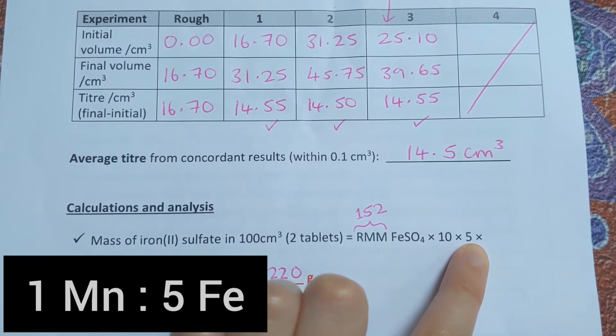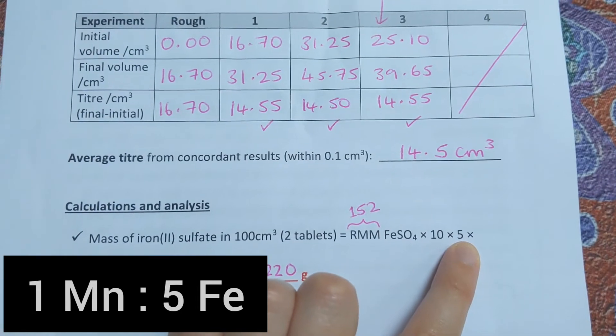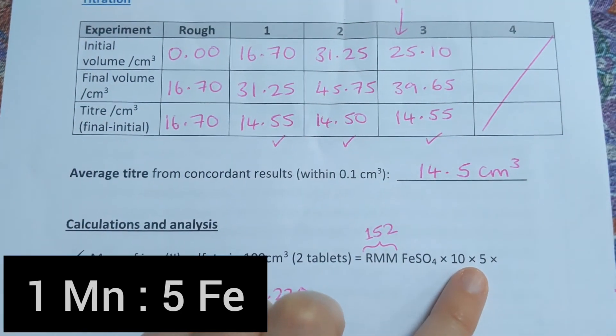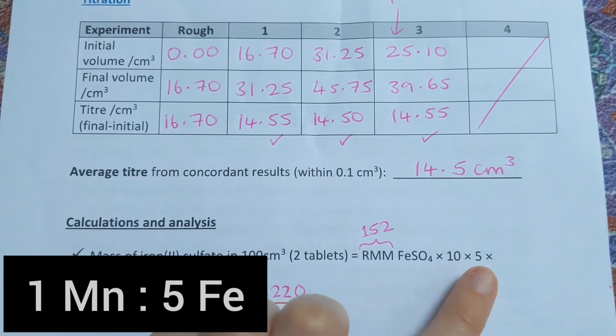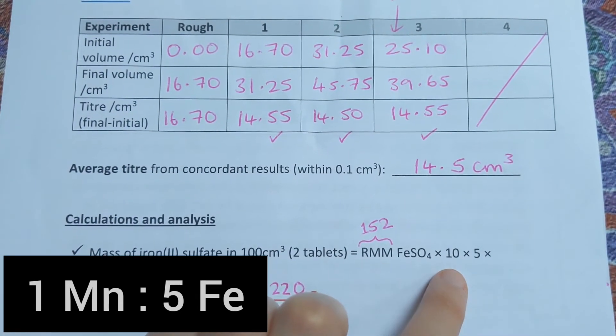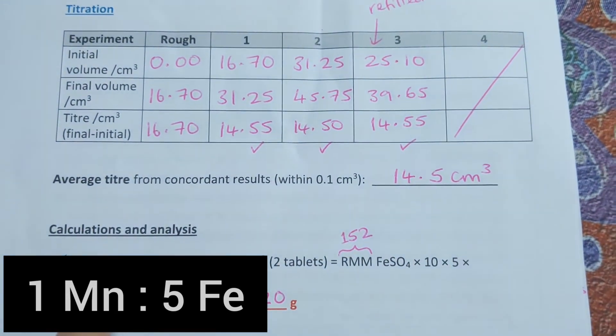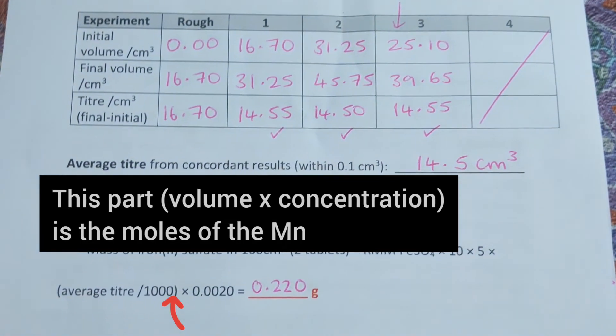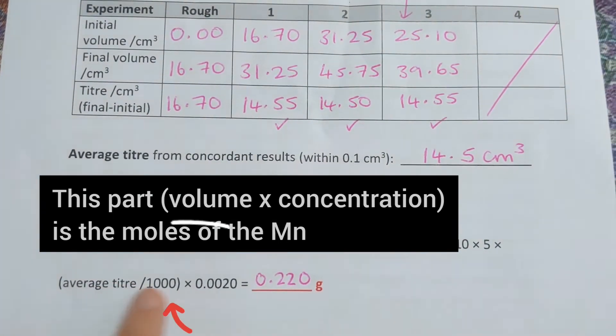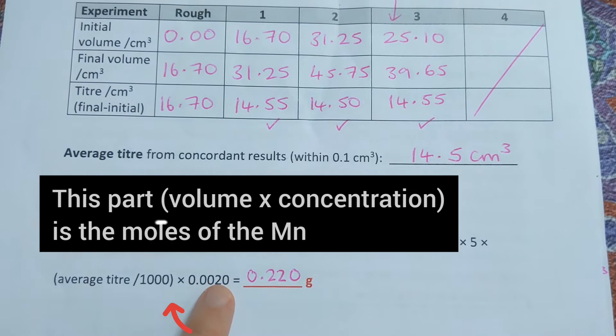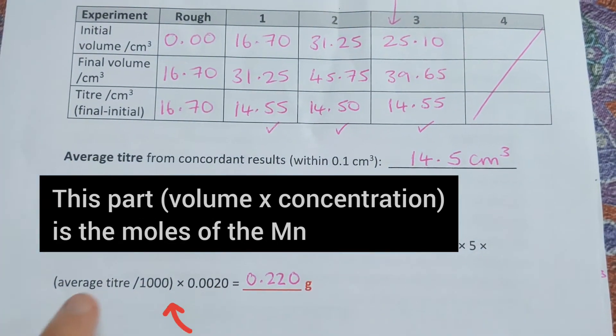We times by 5—remember that ratio I showed you earlier, we have 5 of the iron ions to every 1 manganate ion. We times by 5 because we're trying to work out the mass of the iron(II) sulfate. Then we times by the moles of the manganate, so the concentration of the manganate times our average titer, which is the volume of the manganate.